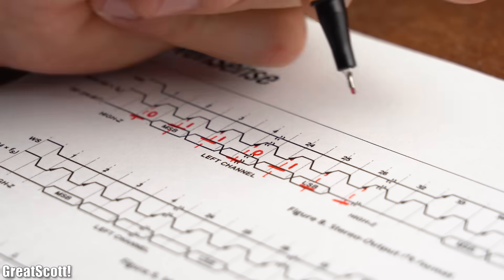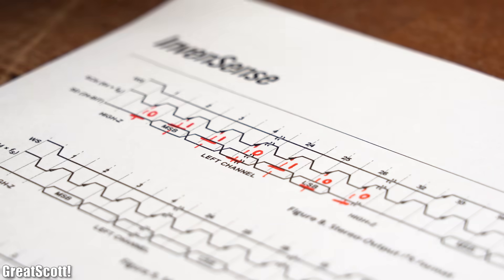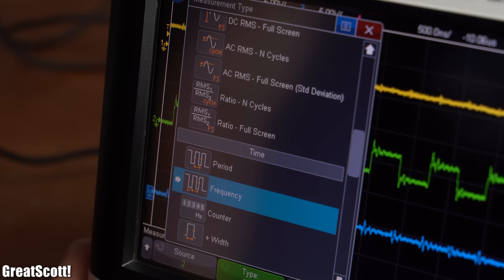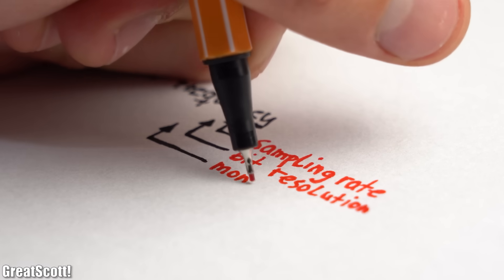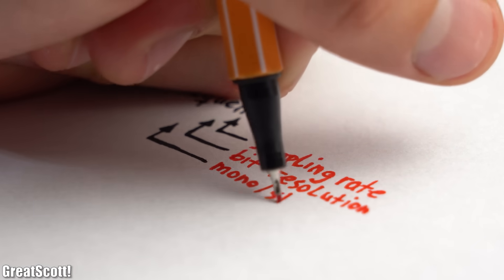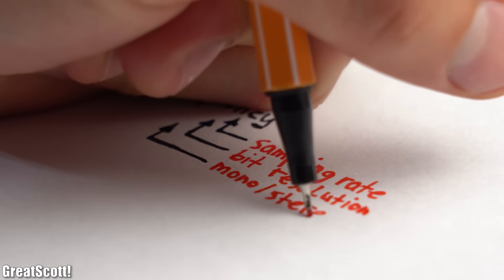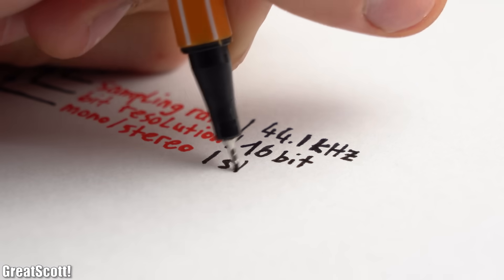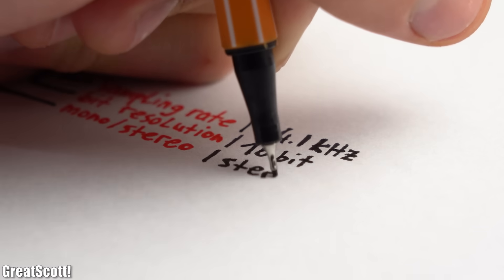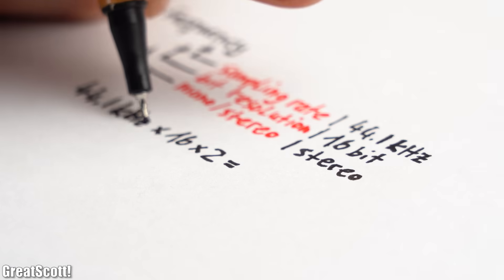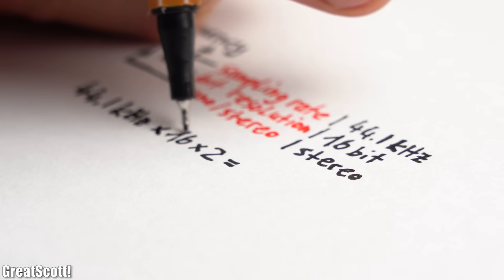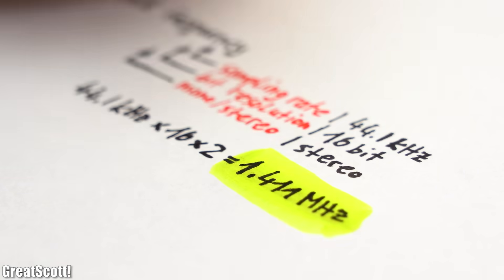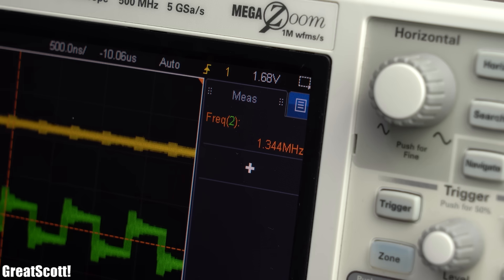But what is special about this communication is the frequency of the clock signal. It is actually adjustable and depends on the sampling rate, bit resolution, and whether you want to transmit mono or stereo. In our microphone example we selected 44.1kHz with 16 bits and stereo, which means we have to multiply 44.1kHz by 16 by 2 which equals 1.411MHz, which is also the frequency we are measuring.